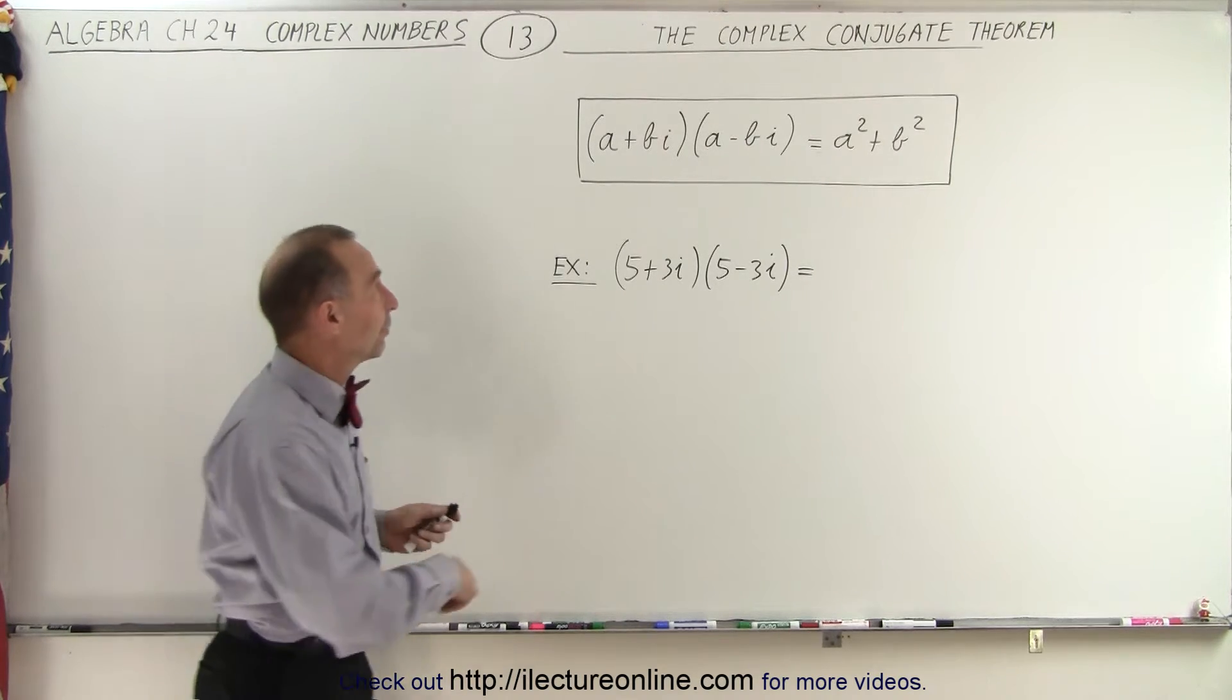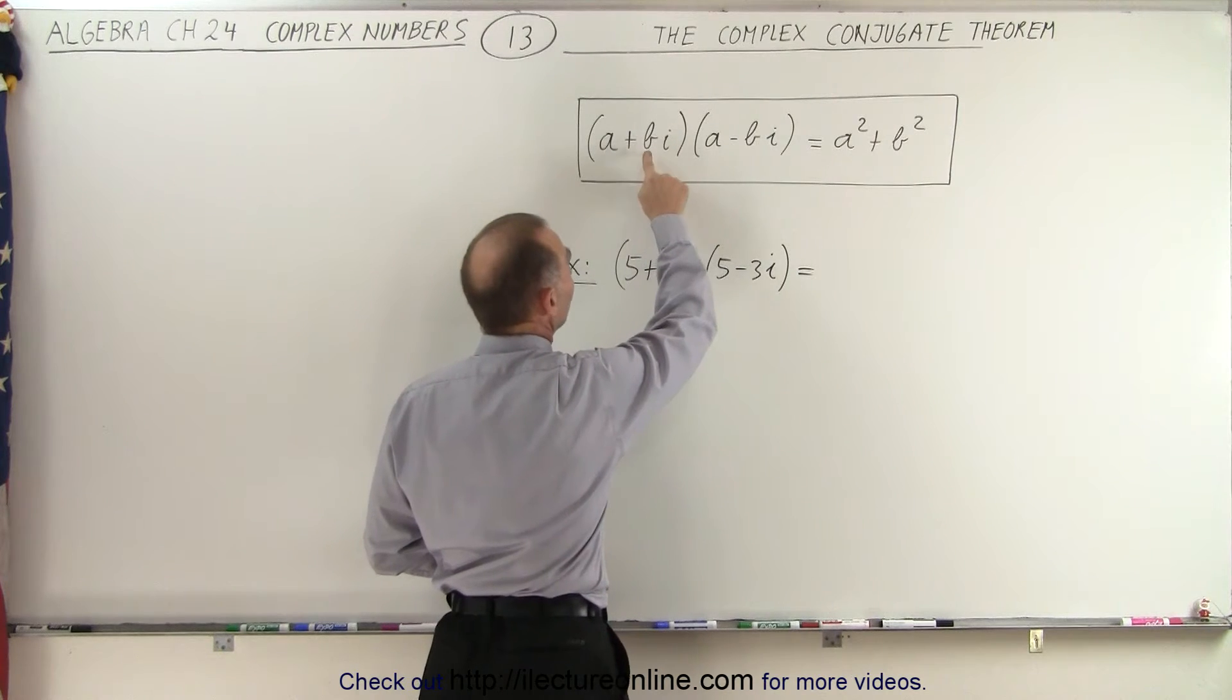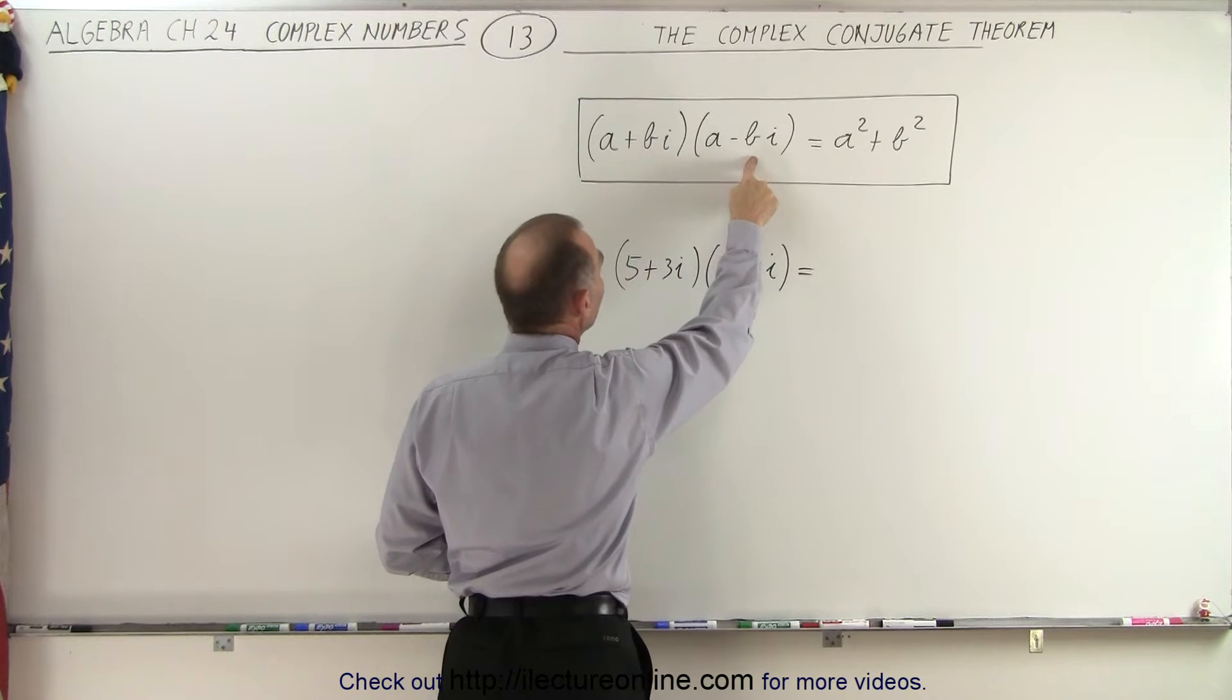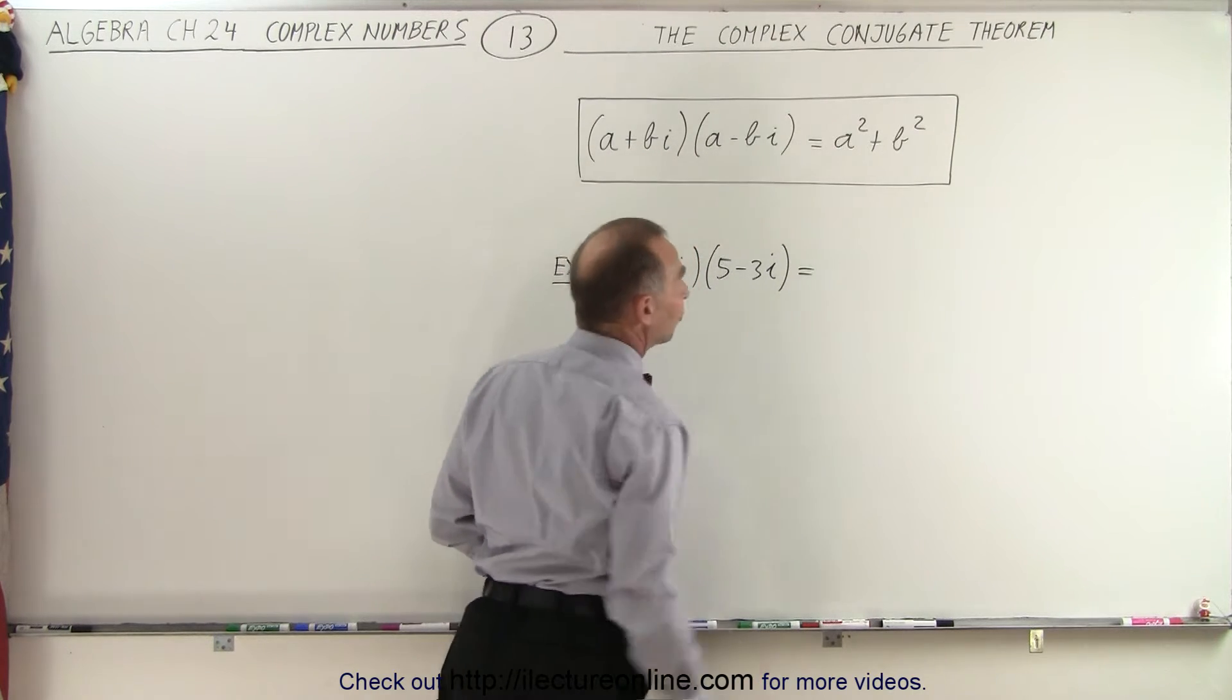it results in simply the first term squared plus the last term squared. So simply, a plus bi times a minus bi is a squared plus b squared.